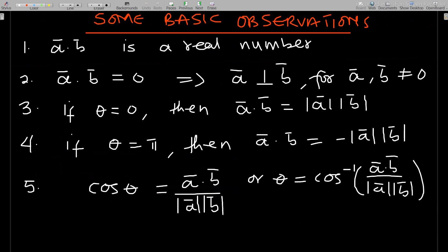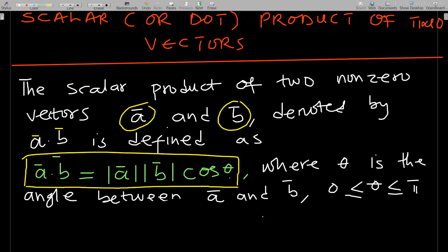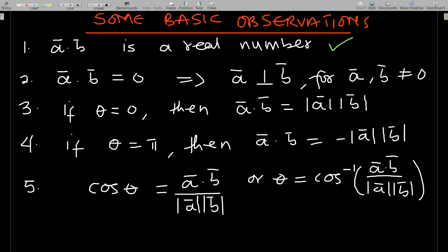Some basic observations: first, a dot b is always a real number. Second, if a dot b equals zero, and a and b are both non-zero, then a is perpendicular to b. This is because when vectors are perpendicular the angle between them is 90 degrees, and cosine of 90 is zero, making the whole right-hand side equal to zero.